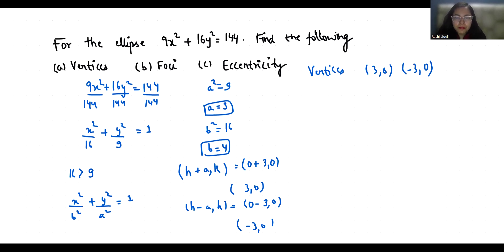Now for the foci of the ellipse, which are located at h + c comma 0, first we have to find the value of c.